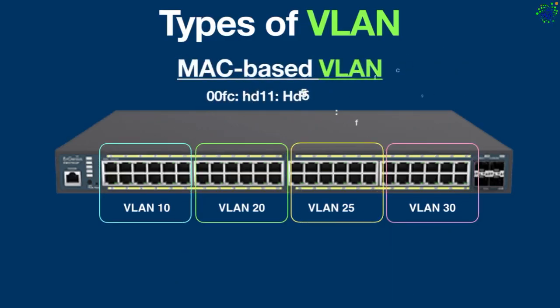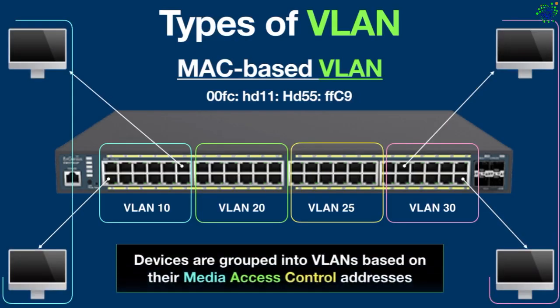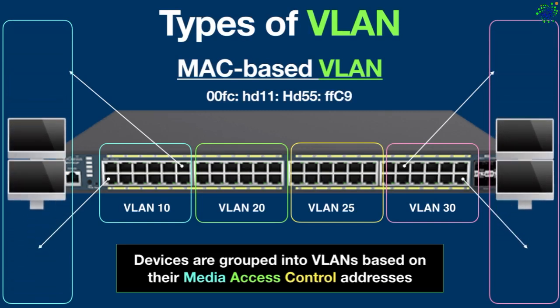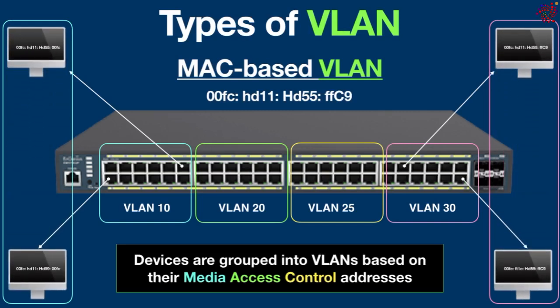In MAC-based VLANs, devices are grouped into VLANs based on their Media Access Control addresses. This allows for dynamic assignment, as devices are associated with a VLAN regardless of their physical location. MAC-based VLANs provide flexibility because devices can be moved around the network without needing to reconfigure VLAN assignments. These VLANs are useful in dynamic environments where devices frequently change locations or need specific access levels.